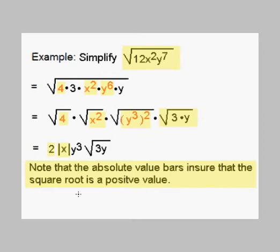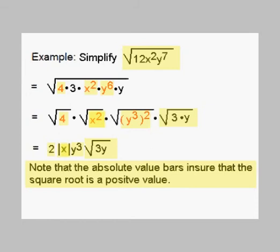Let's say x were negative 5. Then x squared would be 25, and if we took the square root of 25 we would get positive 5. But x was negative 5 — how do we get negative 5 out of x? We get negative 5 by using the absolute value. The absolute value of negative 5 is positive 5, and we need a positive answer. Our other square root — the square root of y cubed quantity squared — turns into y cubed. And we still have our square root of 3y, which we can't simplify further. So the final answer is 2 times the absolute value of x times y cubed times the square root of 3y.